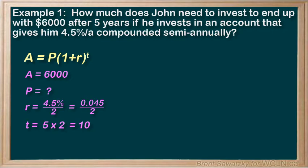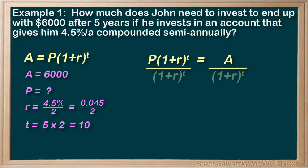Let's rearrange the formula to solve for P before plugging in our numbers. First, let's put P on the left, so switch sides. To get P by itself, divide by (1 plus r) to the power of t on both sides. After cancelling, we're left with P by itself.